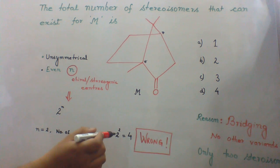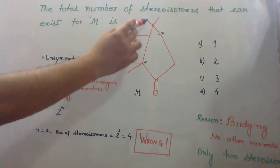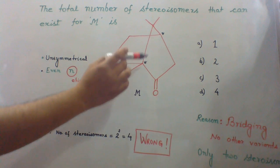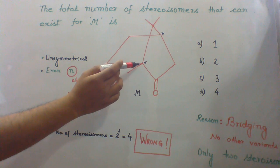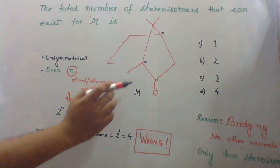We have to carefully observe the given molecule. The given molecule does have prism. Due to prism, rotation is not possible. So, other variants do not exist.